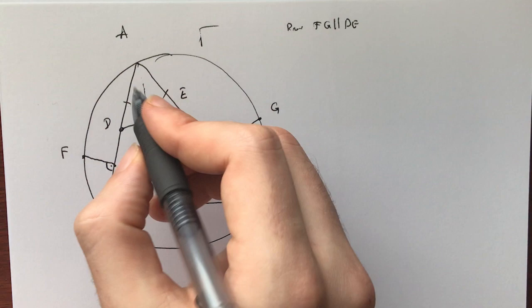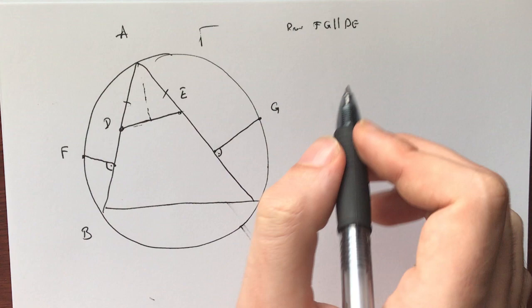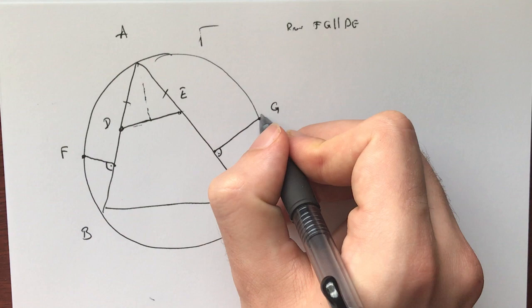This is our problem. We have variable points D and E, such that AD is AE, given on AB and AC, and these perpendicular bisectors intersect these minor arcs at points F and G, and we must prove that FG is parallel to DE. This is actually a very cool problem.